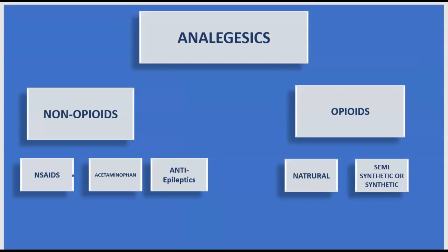Here you can see a graphic showing the breakdown of the types of analgesics. First we have the non-opioids, which include things like non-steroidal anti-inflammatory drugs, acetaminophen, and anti-epileptics. On the other side we have opioids — there are natural opioids and then there are semi-synthetic or synthetic opioids.